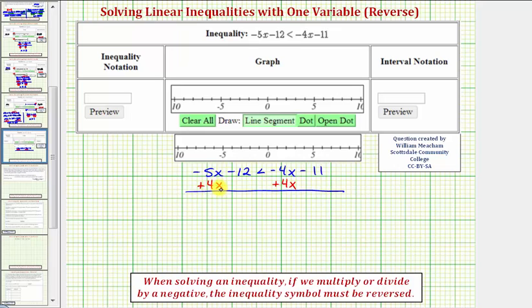Negative 5x plus 4x is negative 1x, or just negative x. So we have negative x minus 12, less than negative 11.